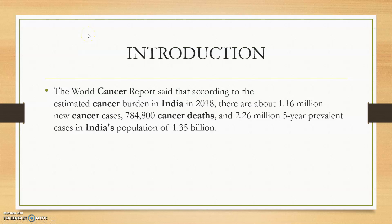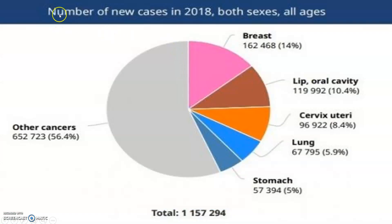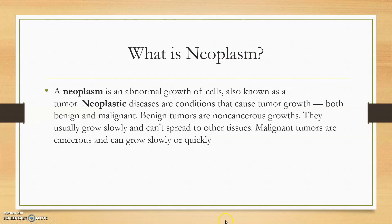So these are the introductory points. According to the estimated cancer burden in India in 2018, there are about 1.16 million new cancer cases — approximately 11,57,000 cases in both males and females. So what is neoplasm? Neoplasm is an abnormal growth of cells, also known as tumor, also known as cancer.